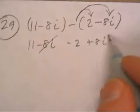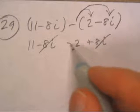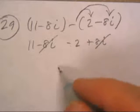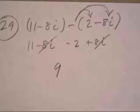The a's eliminate. 11 minus 2 is 9. We'll be back.